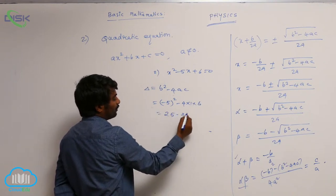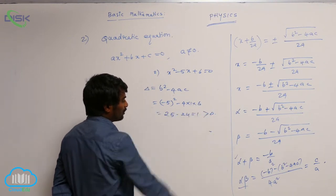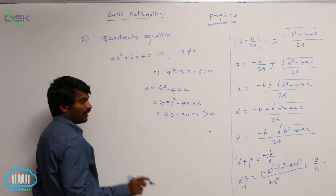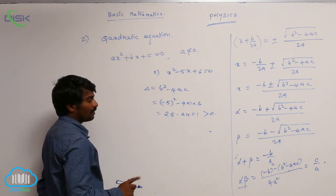So 25 minus 24 again 1 is greater than 0. So it is having real and unequal roots.